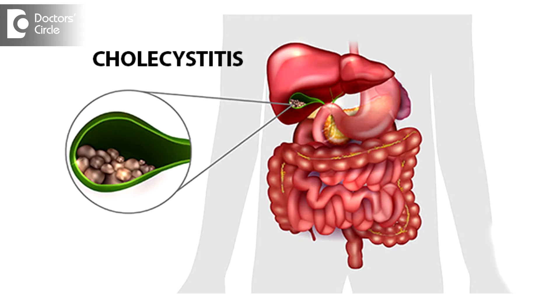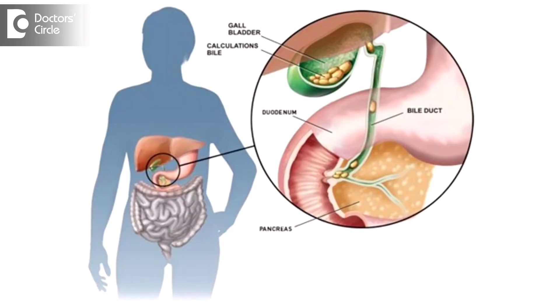Gallbladder infection is called cholecystitis. This is more often common in case of gallstones in the gallbladder, and gallstones happen whenever there is irregular eating habits. As I said, the gallbladder stores the liver juice, and if you do not eat on time and adequately more frequently, then the gallbladder does not contract.